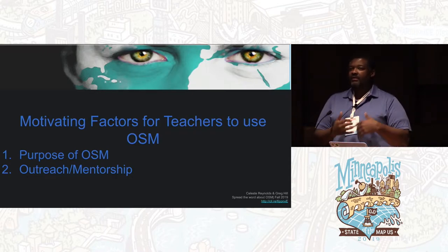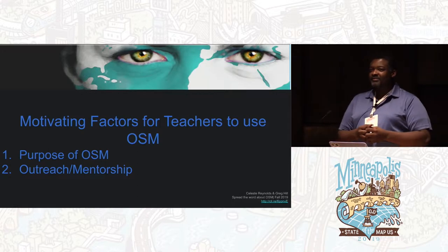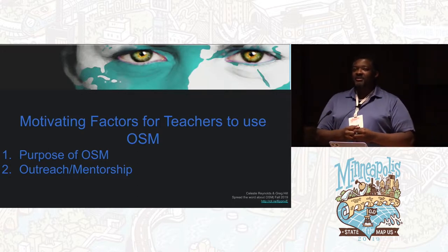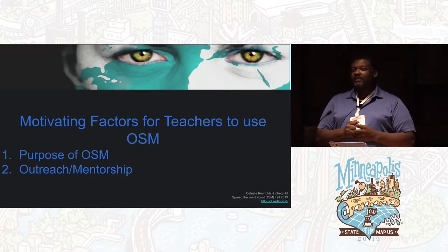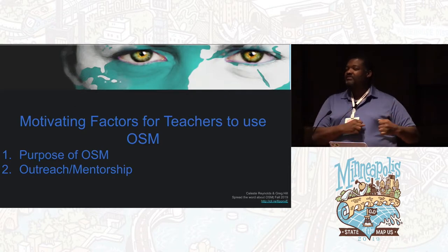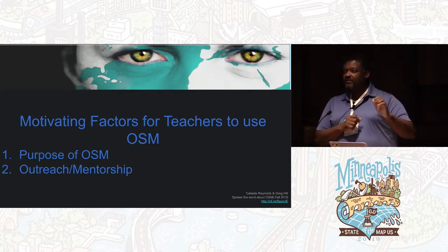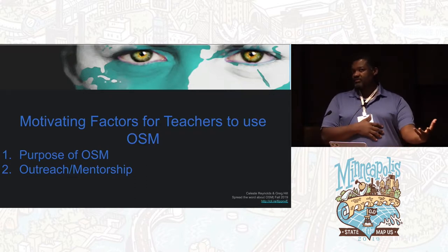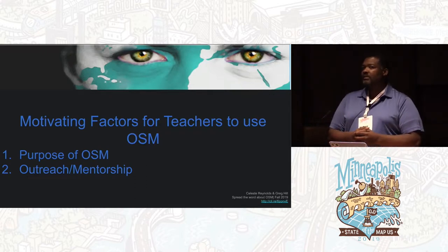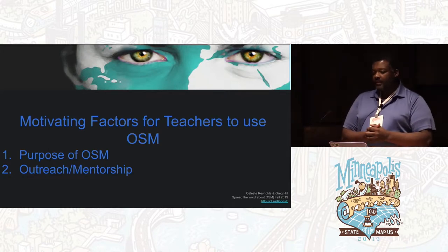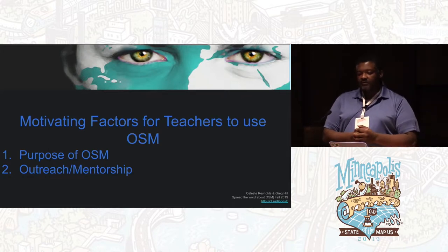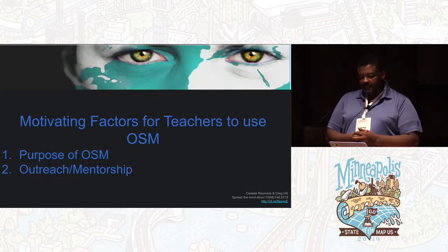The problem is we as geography teachers have so much content in a short amount of time. I want to give credit to Celeste because she really beat me over the head — you've got to use OpenStreetMaps. Over time, it took me two years to finally see: okay, I can use this for population, urban land use, rural land use. So there are a lot of marriages to be had between the AP Human Geography curriculum and OpenStreetMaps.